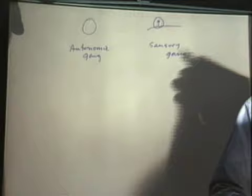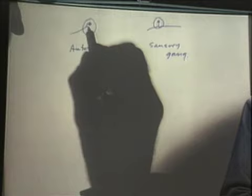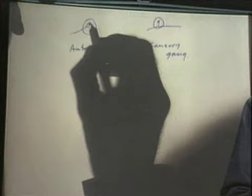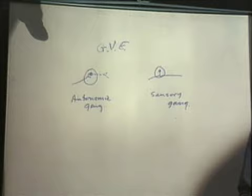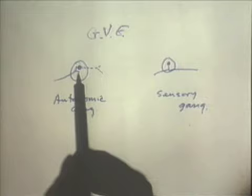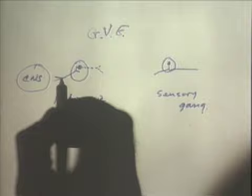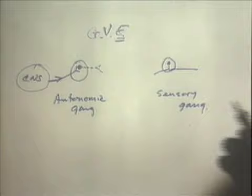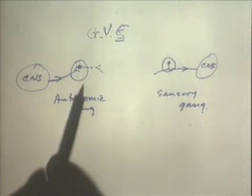In the case of the autonomic system, information comes into the ganglion from one cell body, there is a synapse between that incoming information and a cell body, which then gives rise to a post-ganglionic fiber. So in an autonomic ganglion, there is a synapse. The central nervous system sends efferent information through it. The sensory ganglion, by contrast, is an afferent system with no synapse.